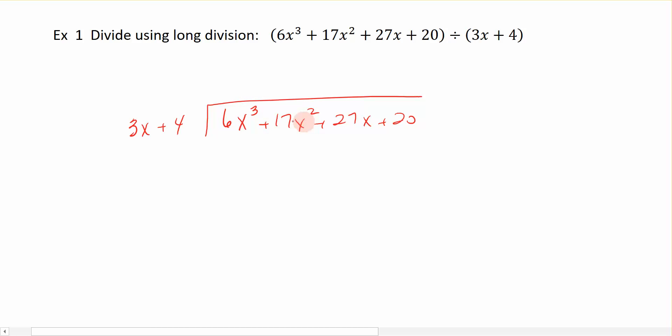When I'm dividing, I'm going to start with this leftmost term, 3x, and you say, what do I multiply 3x by to turn it into 6x cubed? Hopefully, you're saying that's going to be 2x squared, because 2 times 3 is 6, and x squared times x is x cubed.